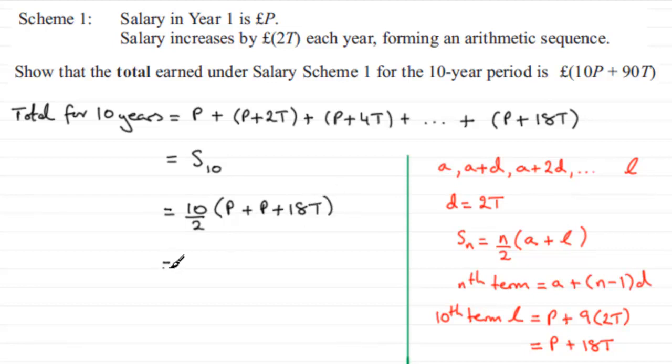And if we tidy this up, 10 divided by 2 is 5, and then in the bracket here we've got p plus p, which is 2p, and then plus 18T. And if we expand this, we're going to get 5 times 2p, which is 10p, and 5 times 18T, which is plus 90T. And that is going to be the amount in pounds.